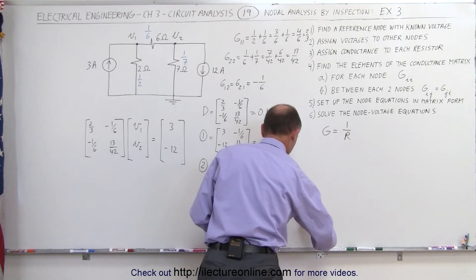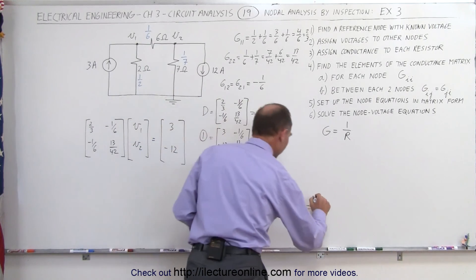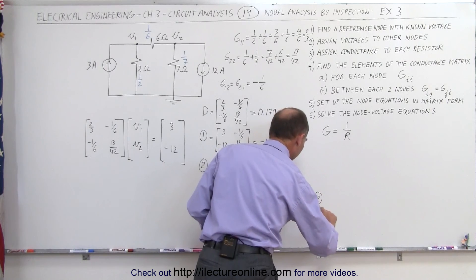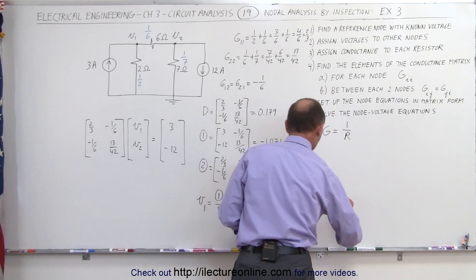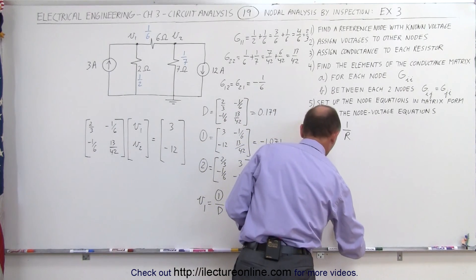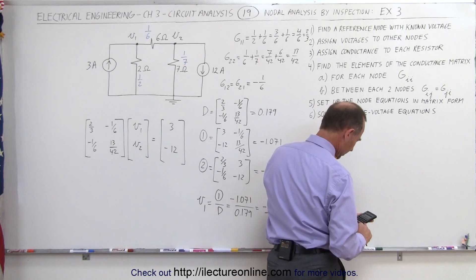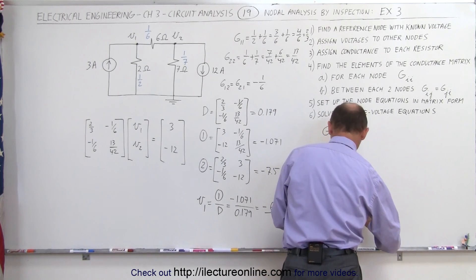And for V2, V2 we take the, well I might as well write it out, matrix 2 divided by the determinant, matrix 2 is minus 7.5, divide that by 0.179, close enough to 42, so we'll just call it minus 42 volts.